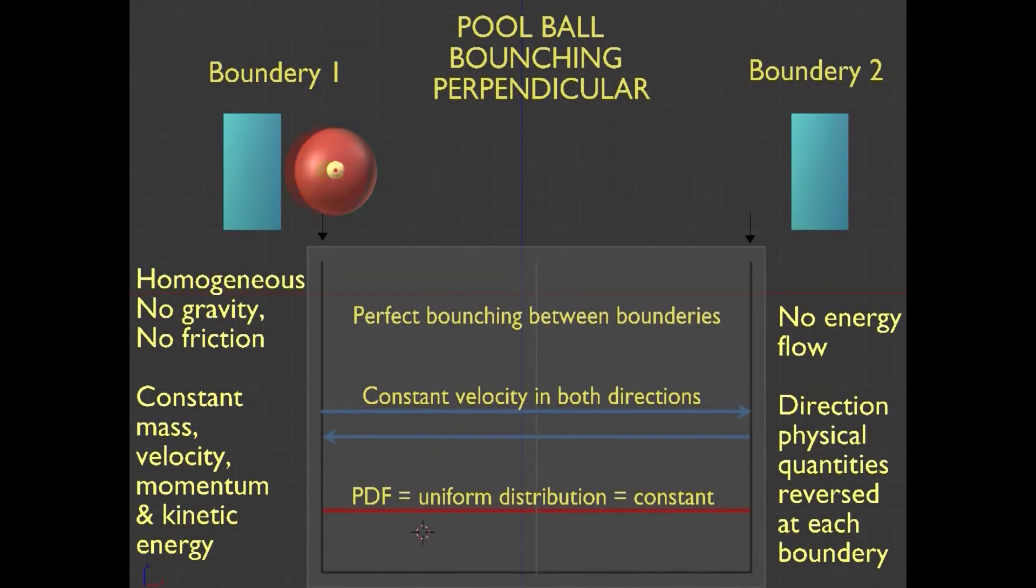In the animation, the pool ball bounces perpendicular up and down between the two boundaries. It assumes that its velocity and energy are constant and that it moves in a straight line between the two boundaries. This results in the PDF with a uniform distribution for the position of the pool ball between these two boundaries.